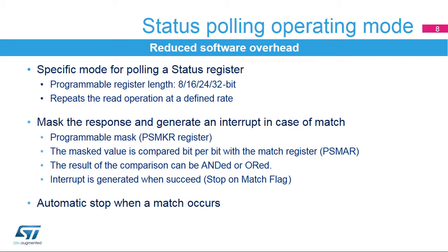A specific mode has been implemented in the Quad SPI interface to autonomously poll the status registers in the external flash memory. The Quad SPI interface can be configured to periodically read a register in the external flash memory. The returned data can be masked to select the bits to be evaluated, and the selected bits are compared with their required values stored in the match register. The result can be treated in two ways: in ANDED mode, if all the selected bits are matching, an interrupt is generated; in ORD mode, if one of the selected bits is matching, an interrupt is generated.